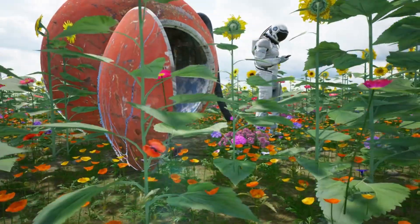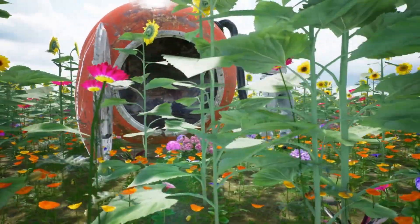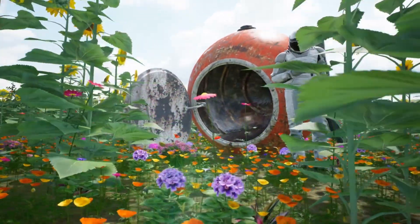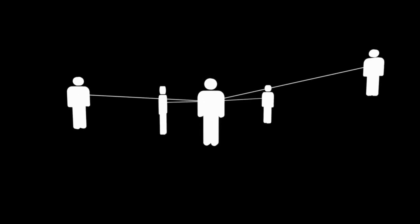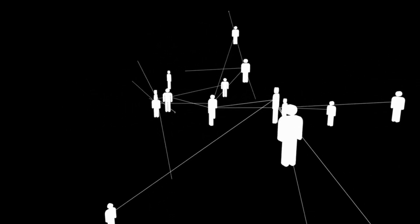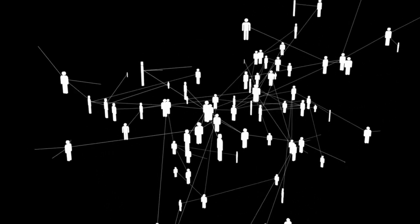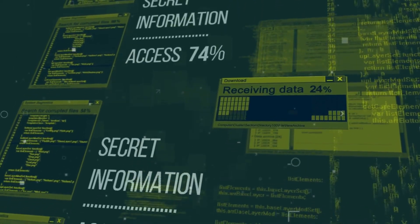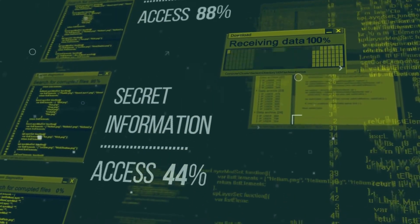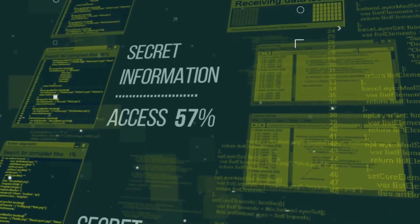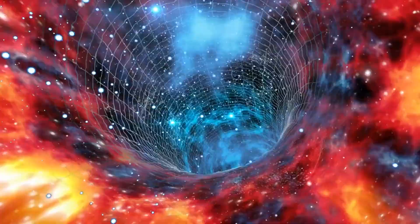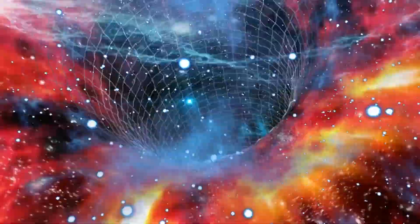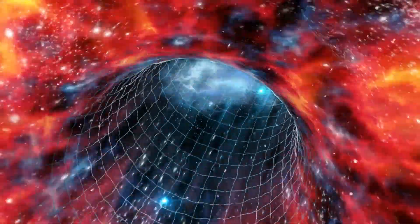Secure communication: space exploration often involves transmitting sensitive data, such as mission plans, scientific discoveries, and personal astronaut communications. Quantum computers offer a game-changing advantage in this domain through their ability to provide secure communication channels. Quantum encryption algorithms based on principles of quantum mechanics can ensure unbreakable communication links, safeguarding data from potential interception by hackers or adversaries. Quantum key distribution could establish cryptographic keys resistant to any eavesdropping attempts, enabling secure and private communication across vast distances in space.